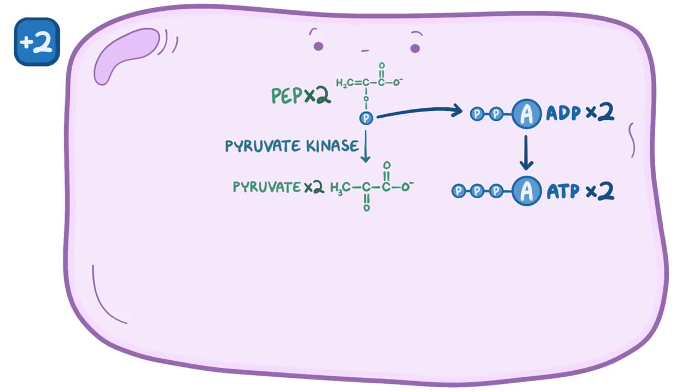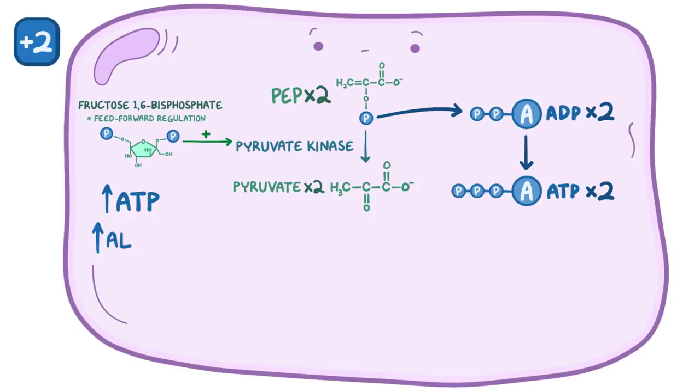As it turns out, pyruvate kinase is also regulated by the cell. Interestingly, fructose 1,6-bisphosphate upregulates pyruvate kinase, a process called feedforward regulation, because it's kind of like one enzyme priming another one because it's clear that things are about to get busy. On the other hand, high levels of ATP and the amino acid alanine downregulate pyruvate kinase activity. Alanine comes from skeletal muscle breakdown when fasting, and it's used as a substrate for making new glucose. So high levels of alanine signify that the body needs to make new glucose, not break it down in glycolysis.